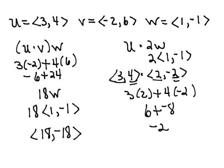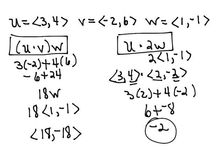So notice in our second example, U dot 2W, we ended up with a scalar. And in our first example, U dot V times W, we ended up with a vector in component form for our answer.